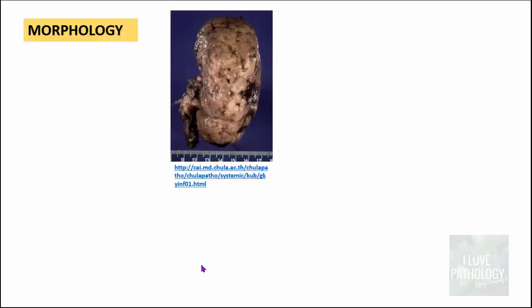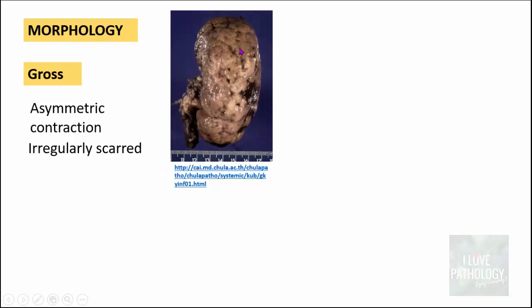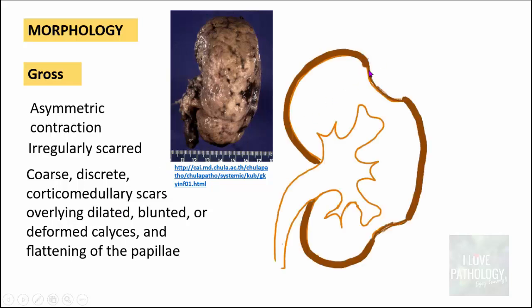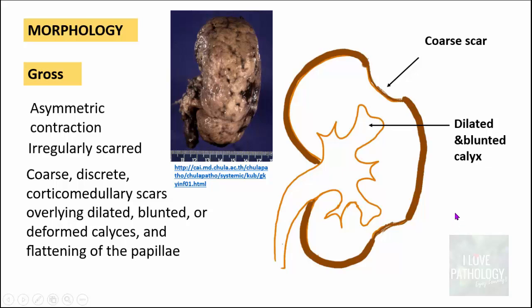Moving on to the gross findings: in this classical gross photograph, you can identify that this is a kidney. The affected kidney is contracted, but the contraction is not symmetrical — it is an asymmetric contraction. You find irregular, discrete, coarse corticomedullary scars on the external surface, overlying blunted or deformed calyces. There is also flattening of the papilla.